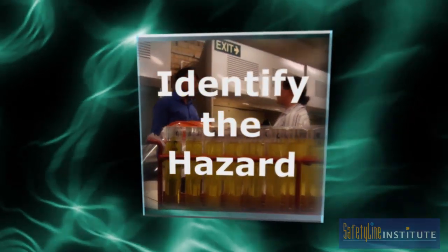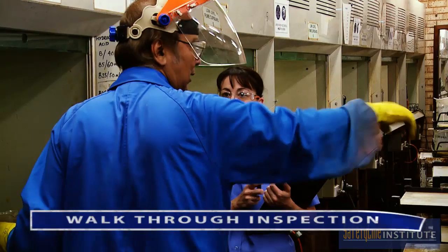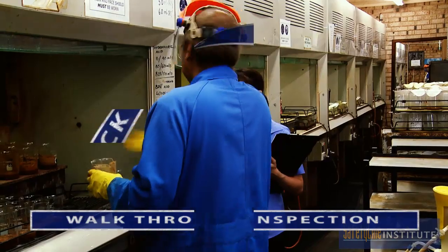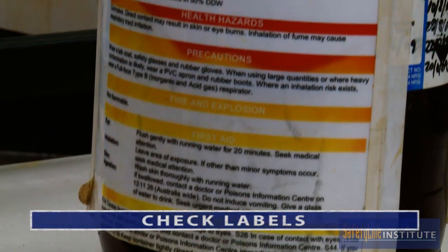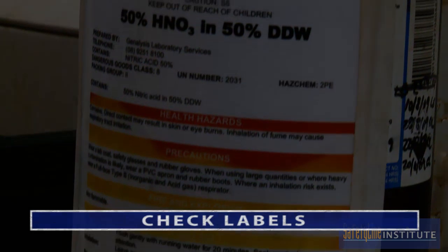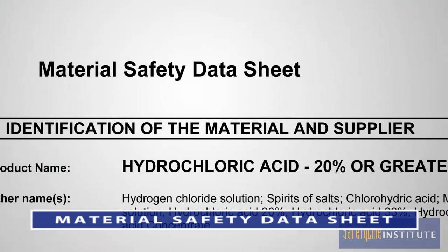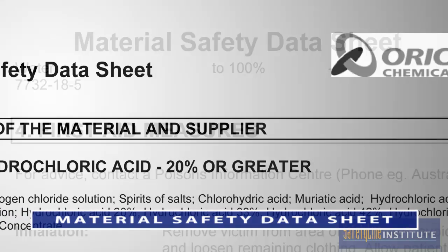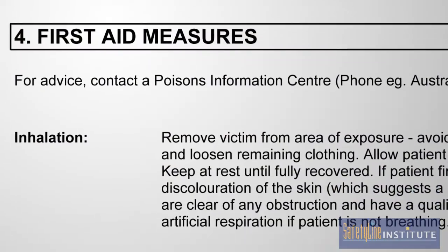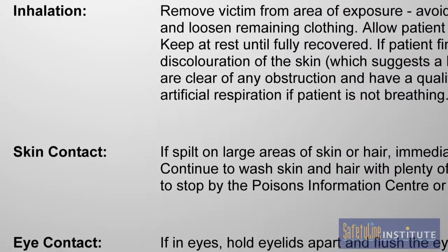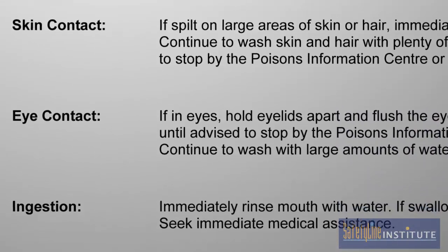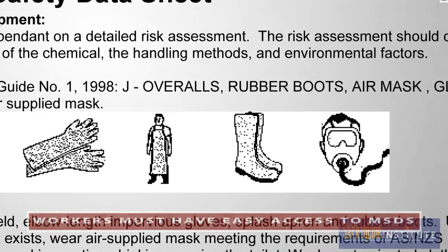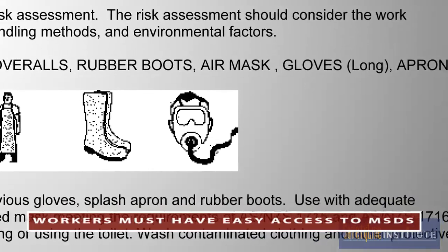Talking to workers during a walkthrough inspection is the best way to start identifying the hazardous substances in the workplace. During the walkthrough inspection, it's important to read the labels on the chemical containers and also check the Material Safety Data Sheet, or MSDS, to see if the substance being used is hazardous. The MSDS is provided by the supplier or manufacturer of the chemical, and it will state whether the substance is hazardous and explain how to use it safely. Workers must have easy access to the MSDS.